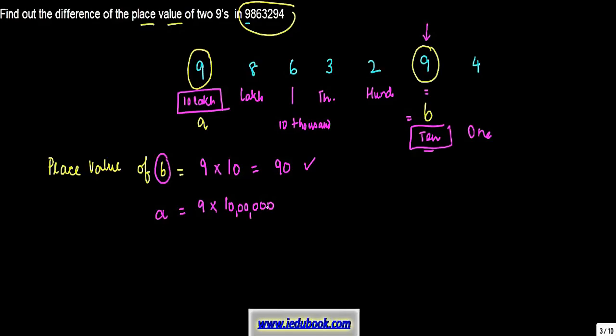And ten lakh we write it down as this. This gives you 90 lakh. And how did I come to these commas that I've written? We saw that this is one, ten, hundred, this is thousand, ten thousand, lakh, ten lakh. Now what do we need to do here? We need to find out the difference of the place value of two nines.